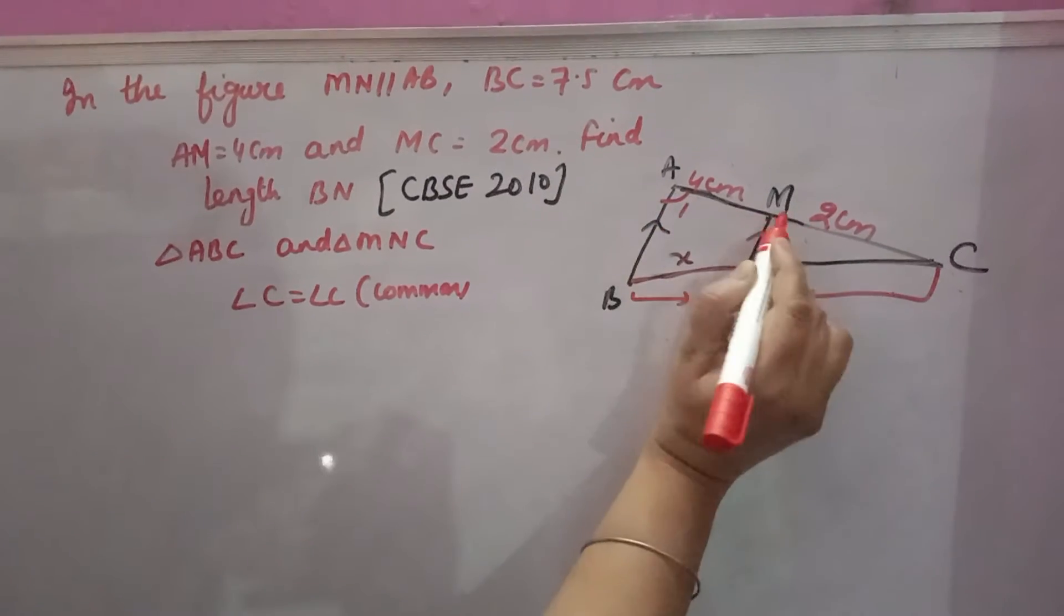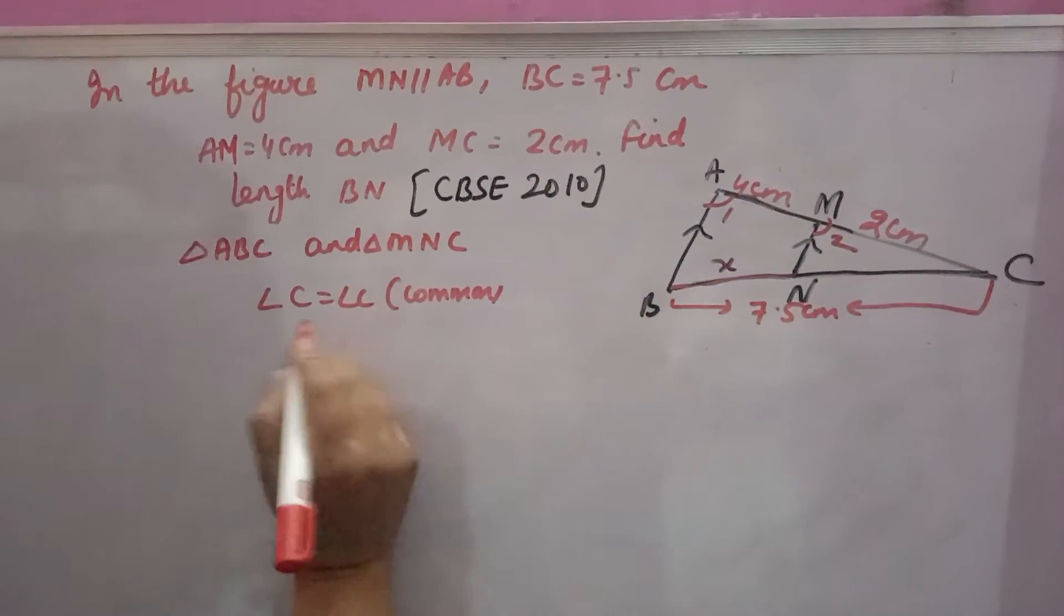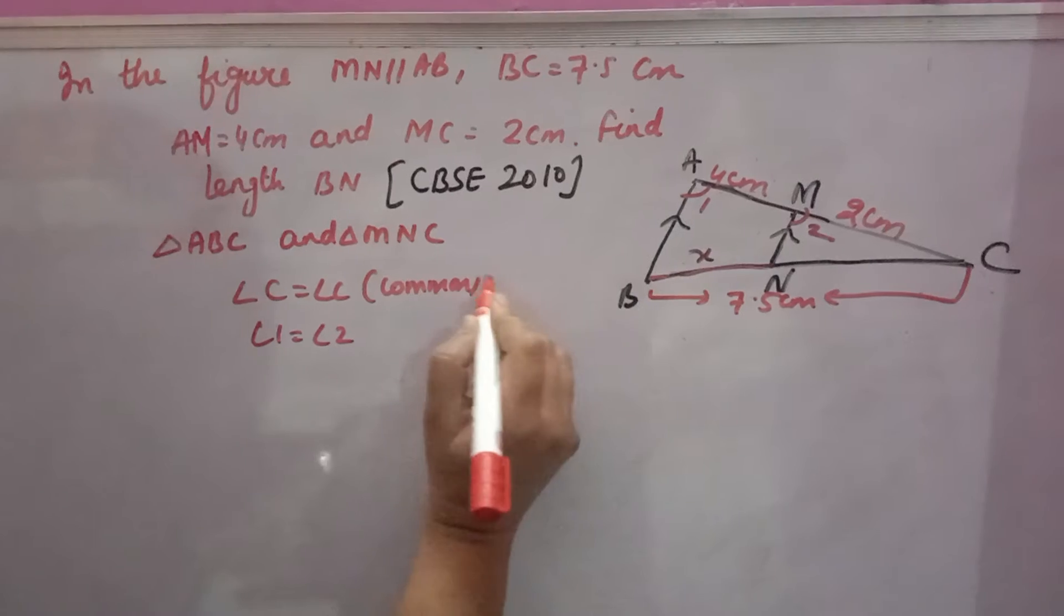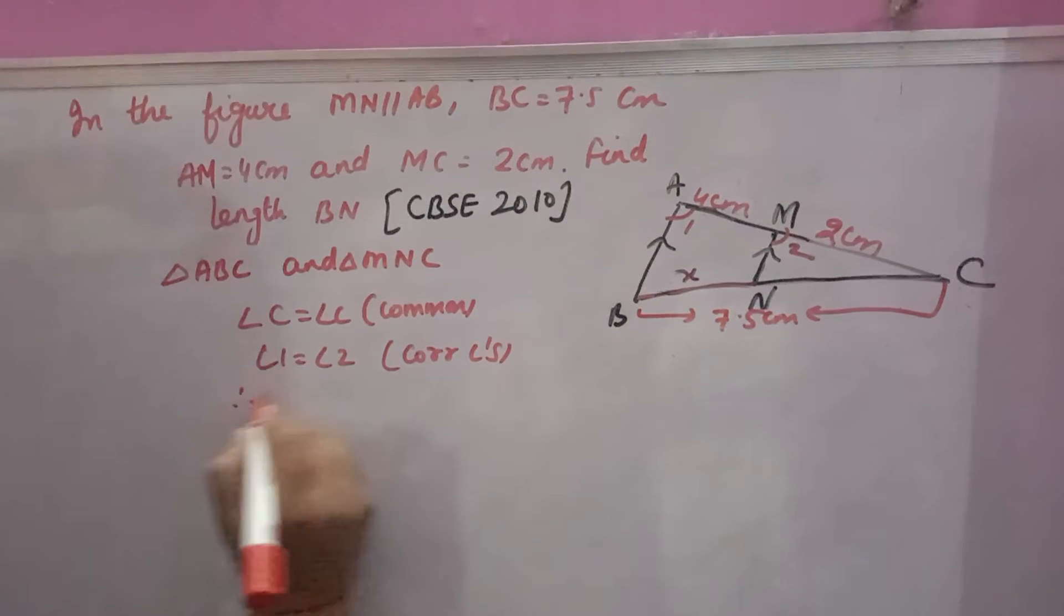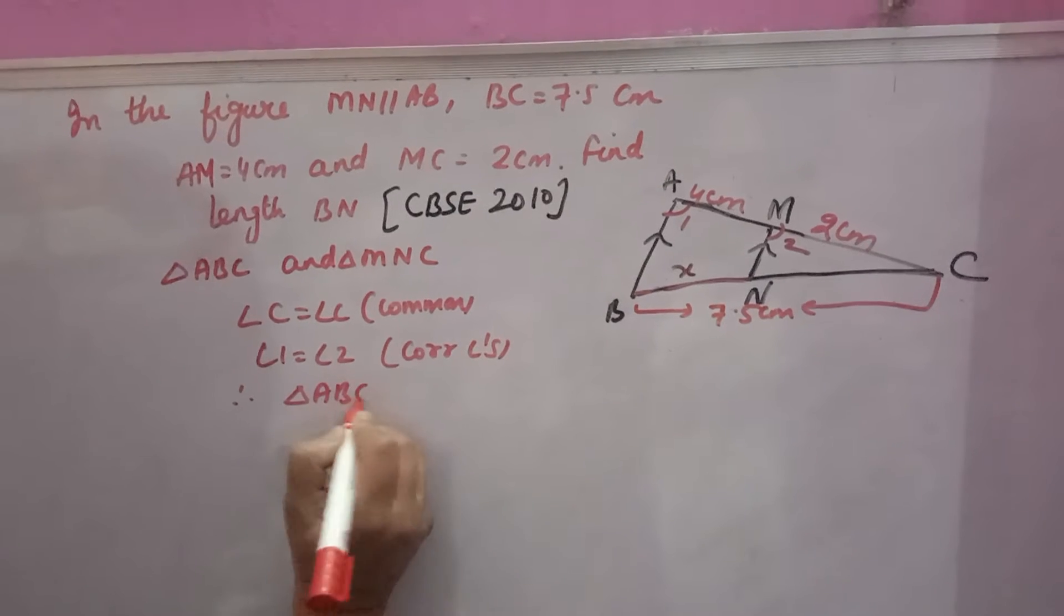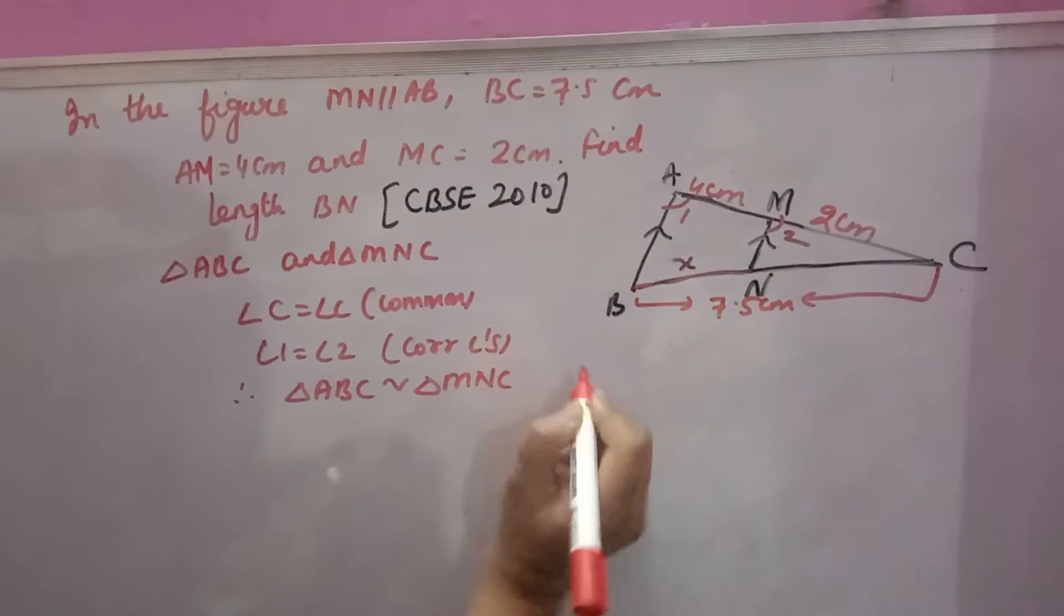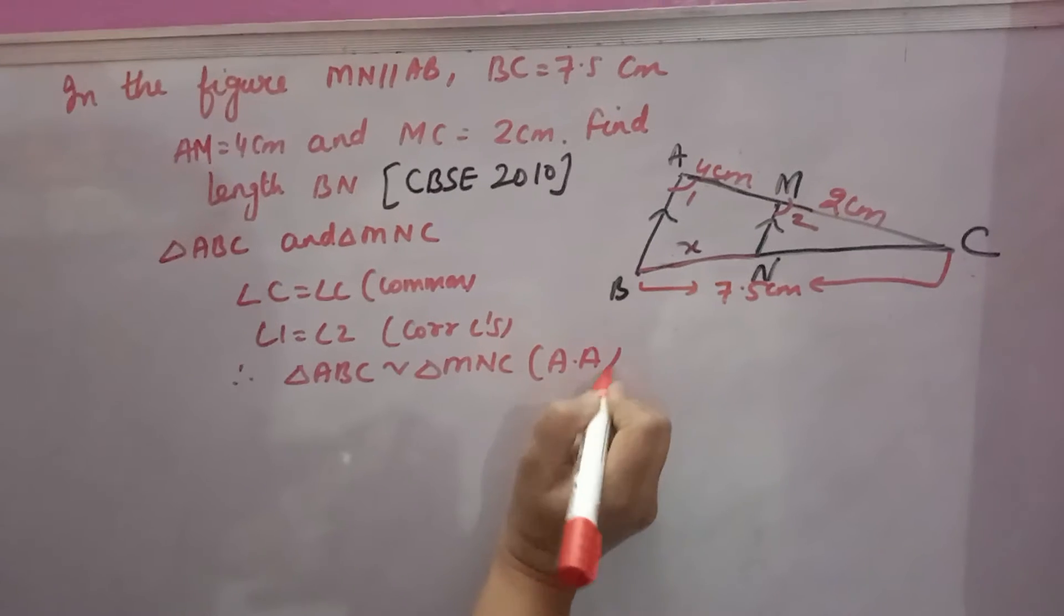Suppose this is angle 1, this is angle 2. Because lines are parallel, angle 1 equals angle 2 by corresponding angles. Therefore, triangle ABC is similar to triangle MNC by AA rule of similarity.